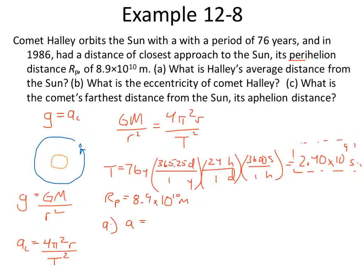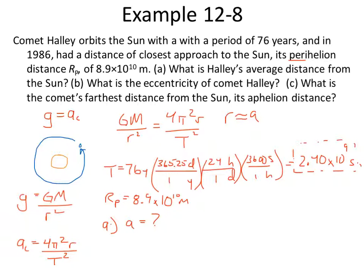Part A: we want to find A — the semi-major axis — which is the average distance from the Sun, or Halley's average radius from the Sun. As you hopefully recall, A is basically equivalent to the radius in our equations. So even though we don't have a perfect circle and don't have a constant radius, A will be our radius value. Part B: we want to find the eccentricity, E_H — the eccentricity of Comet Halley, how oblong its orbit is. And Part C: we want to find the furthest distance from the Sun, the aphelion distance.